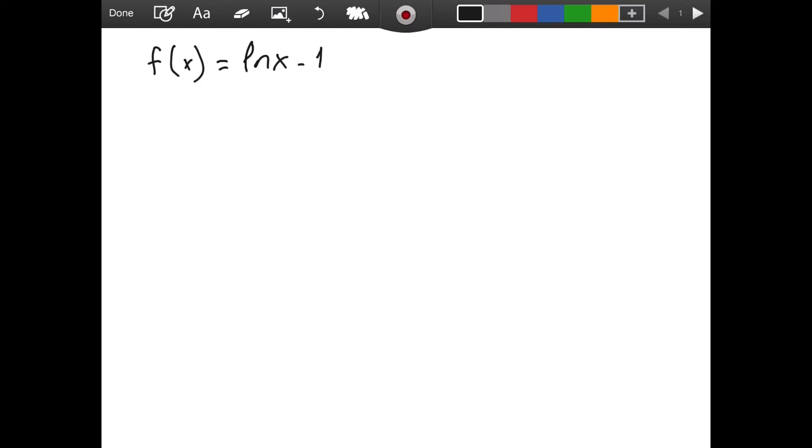As I said, if you plug in e for x, you will have ln of e minus 1. ln of e by definition simply means 1 and then we have minus 1, so it is equal to 0. This means that if we were to graph our function, we would see that one of its roots and actually its only root is e.